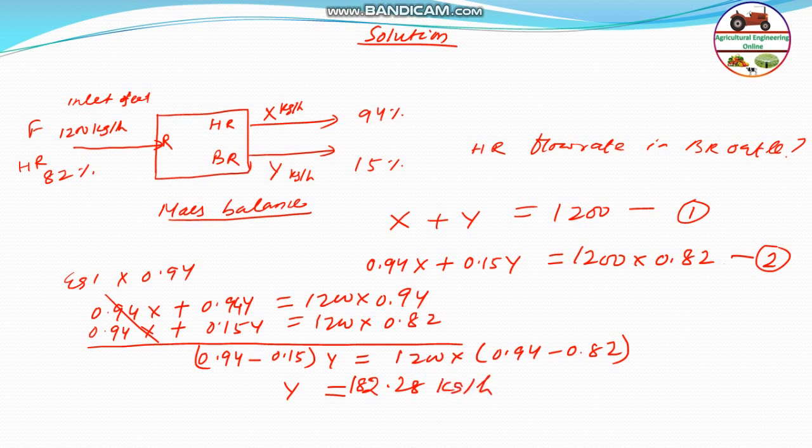Y is this one. This is broken rice outlet ka total flow rate which may 15% head rice a. Therefore, the head rice flow rate in broken rice outlet flow will be equal to 15% that is 0.15 into 182.28 kg per hour.